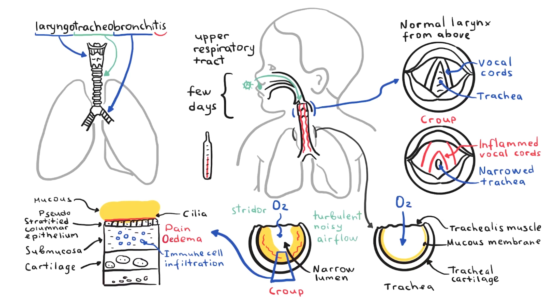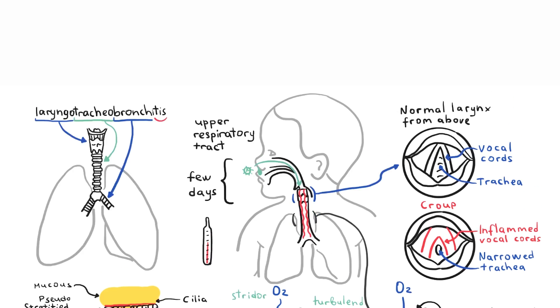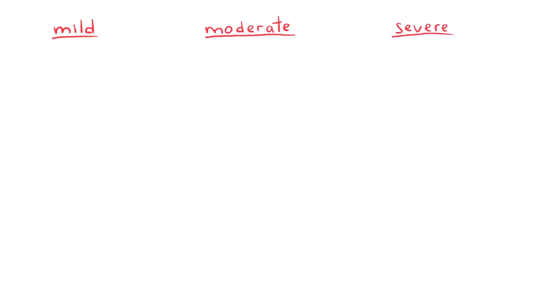In summary, viral croup develops over days with an upper respiratory tract infection, low-grade fever and coryza, followed by a barking cough and various degrees of respiratory distress. In most children the symptoms subside quickly, with resolution of the cough within two days. Croup is the clinical syndrome of hoarse voice, barking cough, inspiratory stridor, and respiratory distress, and can be classified as mild, moderate, or severe depending on clinical presentation.